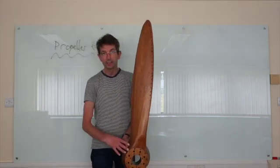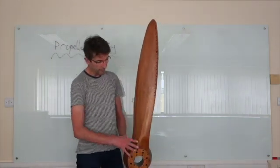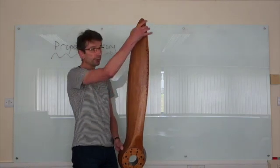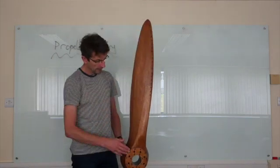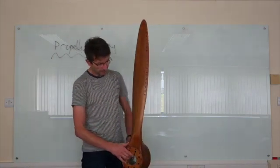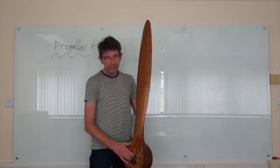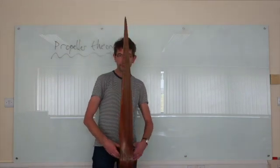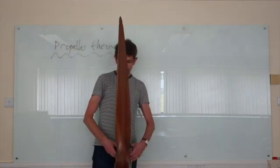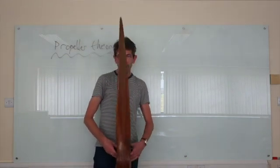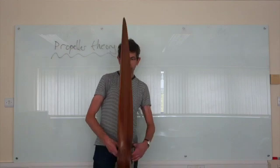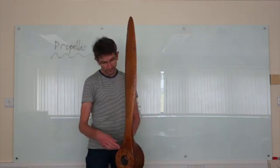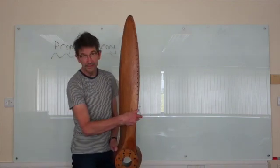The blades have a leading edge and a trailing edge. The blade planform is the variation of chord length along the blade from root to tip. The other major feature of propeller design is the twist distribution — if I rotate this propeller about the blade axis, you can see the twist along the blade.